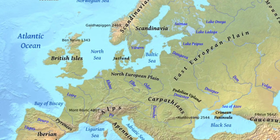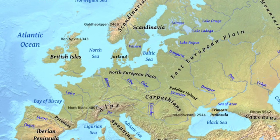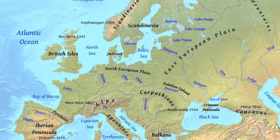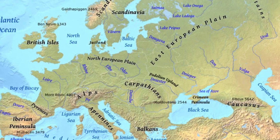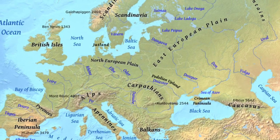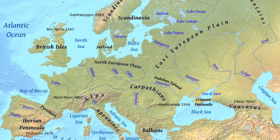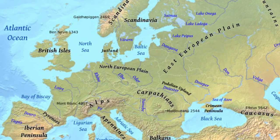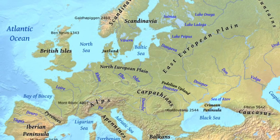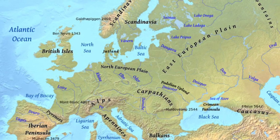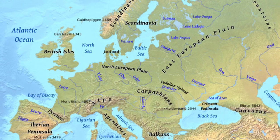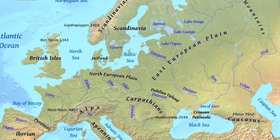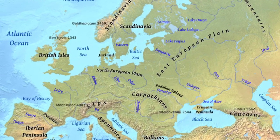Welcome back to your geography class. Previously, we studied about the physical and political divisions of Europe. In today's session, I will be teaching you how and where to point the different physical and political features such as mountain ranges, water bodies, rivers, and five chief cities according to your syllabus. Let's get started with today's session.